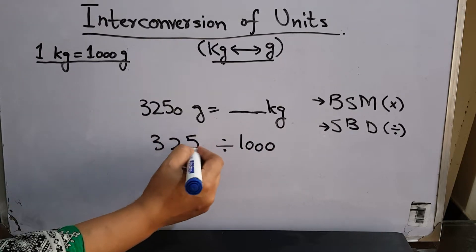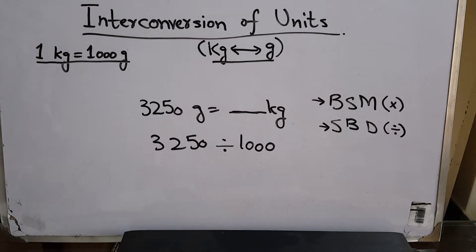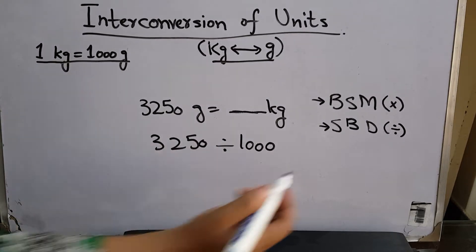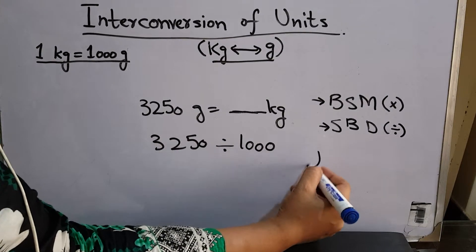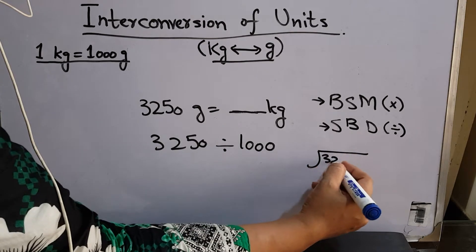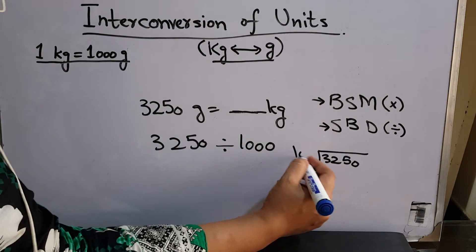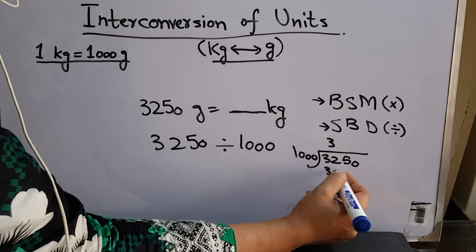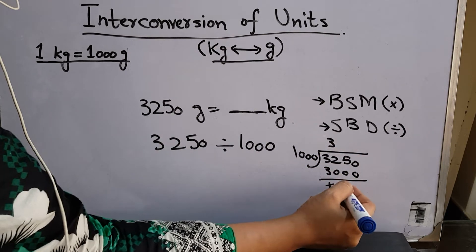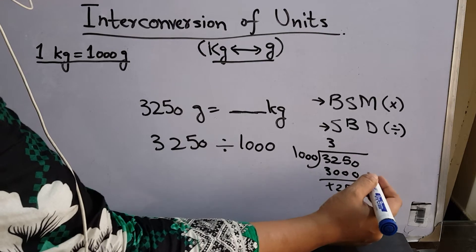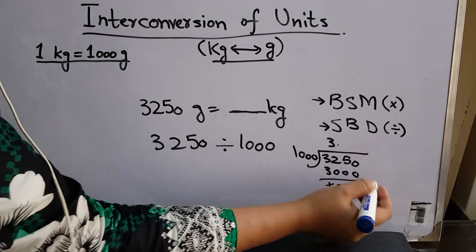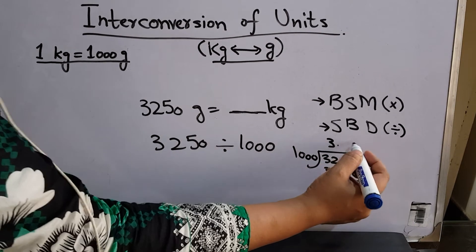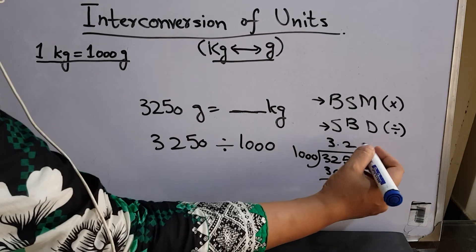Now, the way you solve it is totally up to you. Just to make it easier, I'll be using the division method. 3,250 divided by 1,000. 1,000 goes into 3,250 three times, which is 3,000. The remainder is 250. Adding a decimal, you get 3.25 as an answer.